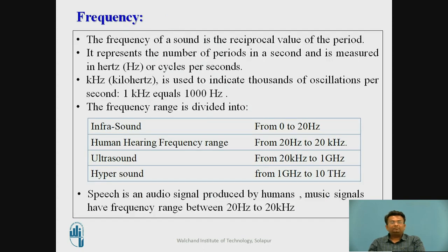The frequency of sound is the reciprocal value of the period. It represents the number of periods per second and is measured in hertz or cycles per second. Kilohertz is used to indicate thousands of oscillations per second; that means 1 kilohertz equals 1000 hertz.